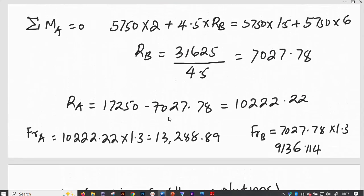That's why I have, therefore, 5,750 times 2 plus 4.5 times RB equal to 5,750 times 1.5 plus 5,750 times 6, and RB is going to equal to 7,027.78 Newtons. Then RA will therefore equal to, if I use equation 1, I will say RA is equal to 17,250 minus 7,027.78, and this is giving us 10,222.22 Newtons.